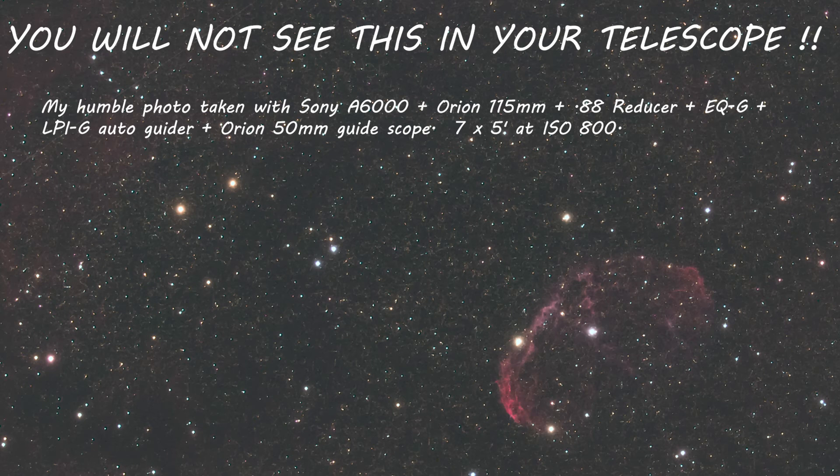Massive stars end their lives in dramatic supernovas in a matter of minutes, where the mass is blasted into space and the remainder collapses into a neutron star or a black hole. The most famous supernova remnant is the Crab Nebula, M1, in Taurus, witnessed in China in the year 1054. The Crescent Nebula in Cygnus is not a supernova remnant — it is a shell blown away by a super hot star called a Wolf-Rayet Star. The Veil Nebula in Cygnus is a supernova remnant, and you can vastly improve your view of it in a telescope with an O3 filter.